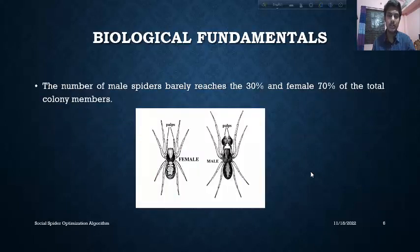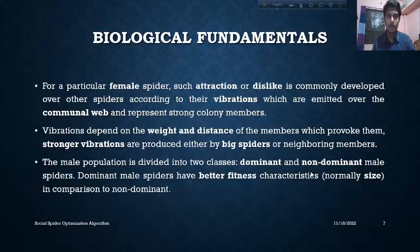The member can be two types: male and female. The male spiders are barely 30% and the female spiders are barely 70% of the total colony members. The female spider is responsible for attraction or dislike in the communal web, and they communicate using vibrations on the communal web. The vibrations depend on the weight and distance.